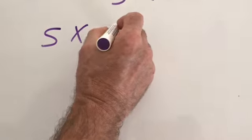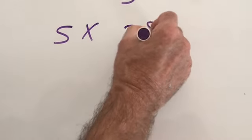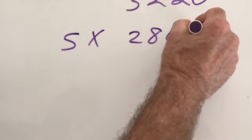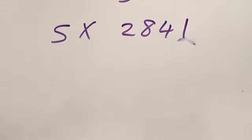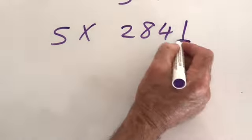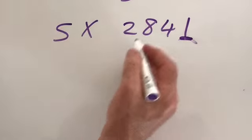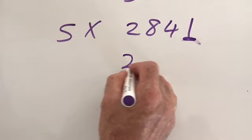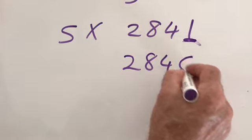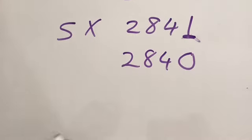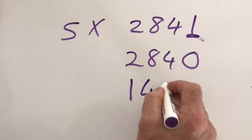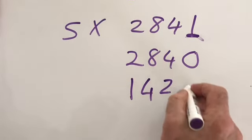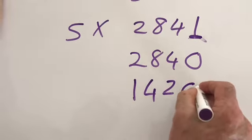Next one. 5 times 2841. Have you identified whether it's odd or even? It's an odd number because it ends in 1. We look at the previous even number. 2840. We now halve it. Half of 2 is 1. Half of 8 is 4. Half of 4 is 2. And half of 0 is 0. And we add our 5 on the end.